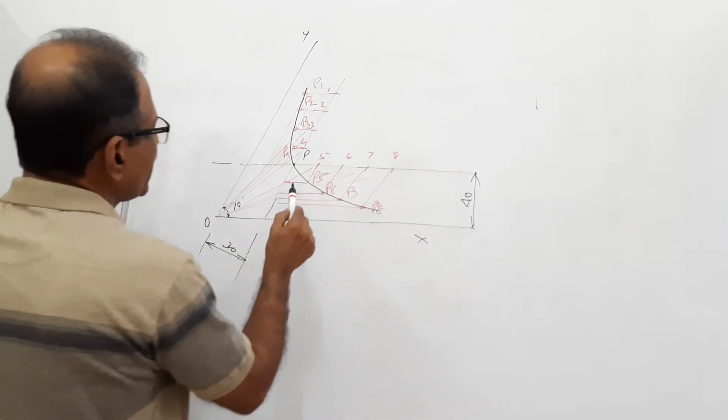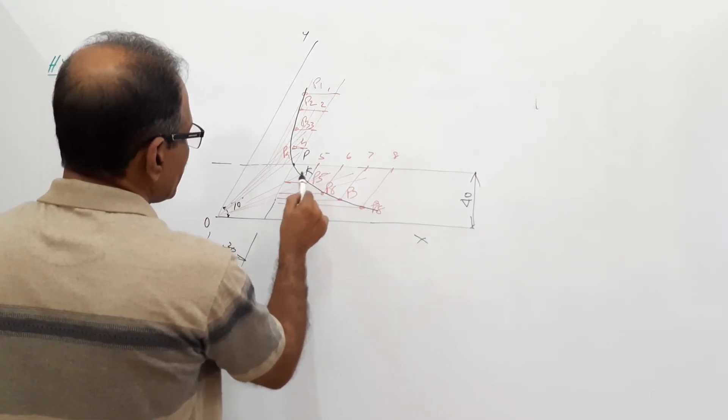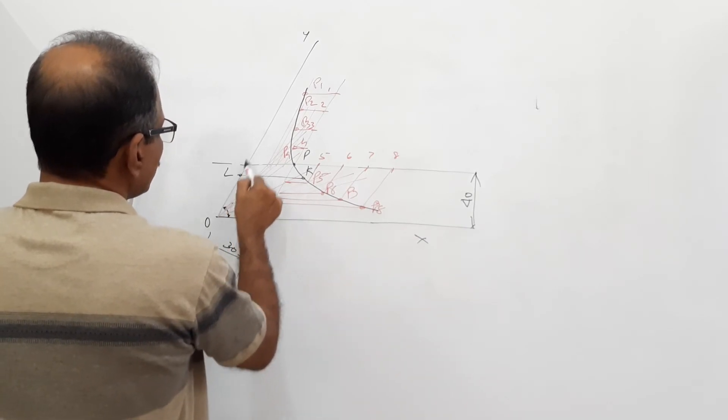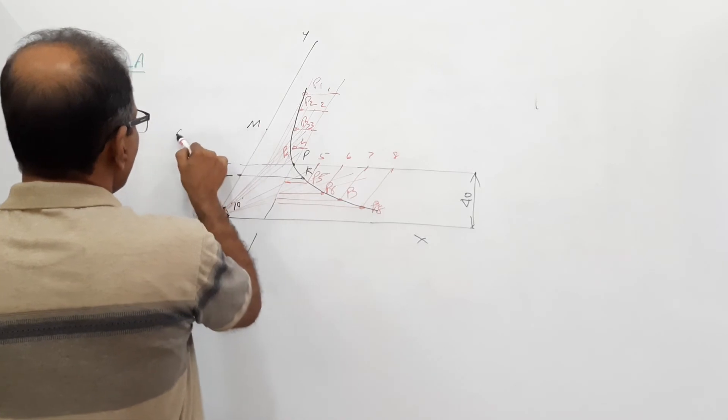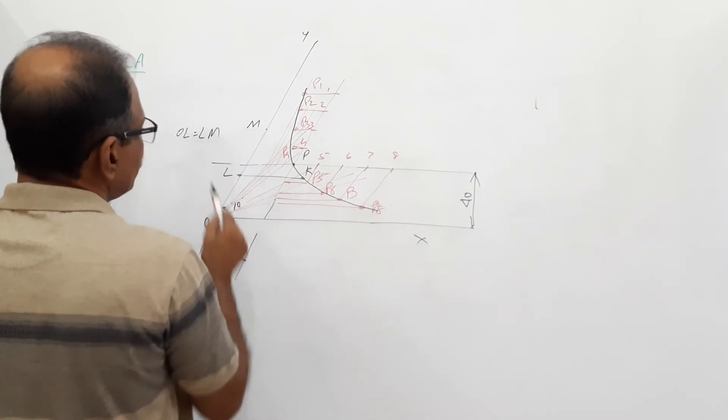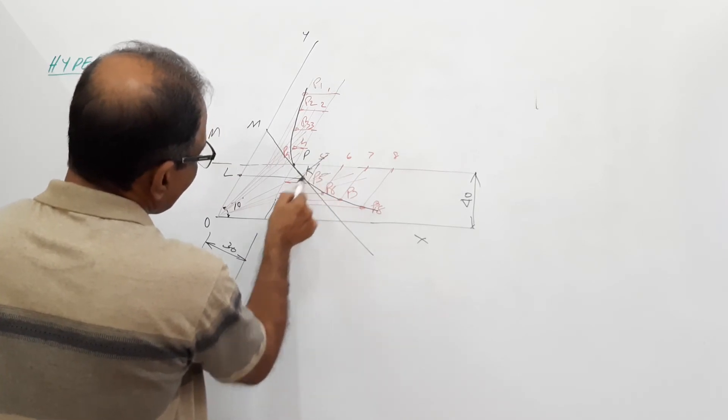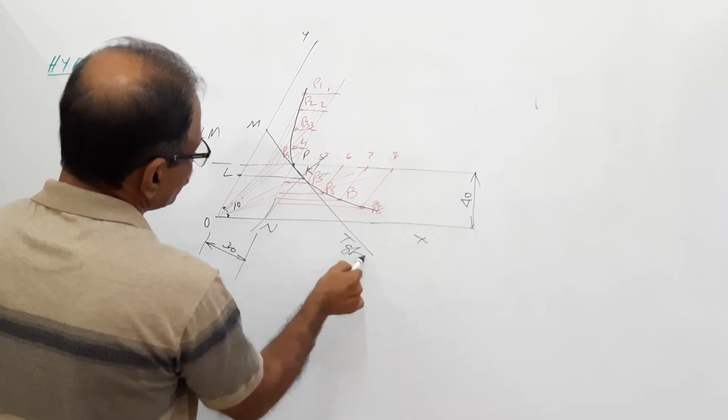If you want to draw normal and tangent at point K, draw a horizontal line through K, get L, take OL and mark M. OL equals LM. MK is the tangent at K, and the perpendicular is the normal.